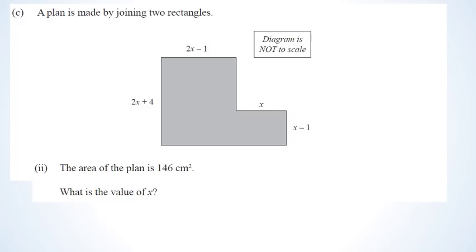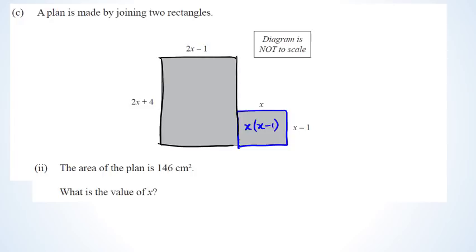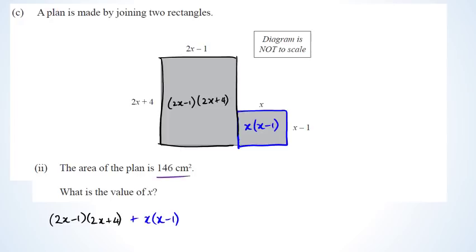The next question asks us to find x if the area is 146 cm². I'm going to split this into two rectangles. The blue rectangle has base x and height x − 1, giving area x(x − 1). The black rectangle has base 2x − 1 and height 2x + 4. So I've got (2x − 1)(2x + 4) plus x(x − 1), and all of this equals 146.